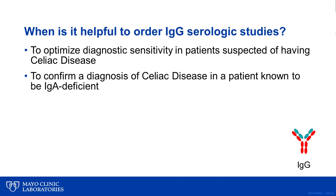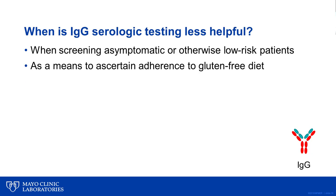When is it helpful to order IgG serologic studies for celiac disease? The most important reason is to optimize diagnostic sensitivity in patients suspected of having celiac disease but with negative IgA testing, and to establish a diagnosis in a patient known to be IgA deficient. IgG serologic testing is less helpful when patients are known not to be IgA deficient, when they are asymptomatic, and when they have a low pretest probability of celiac disease. Additionally, IgG serologic testing is not validated for monitoring adherence to a gluten-free diet.